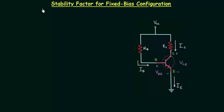In the last lecture I explained stabilization and introduced three types of stability factors. In this lecture I will explain the three steps involved in the calculation of stability factors. Stability factors are different for different biasing schemes.